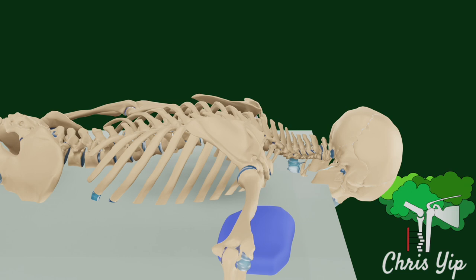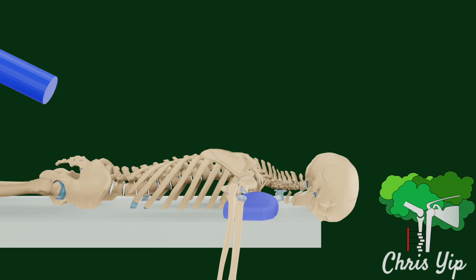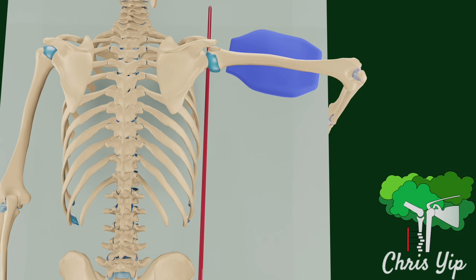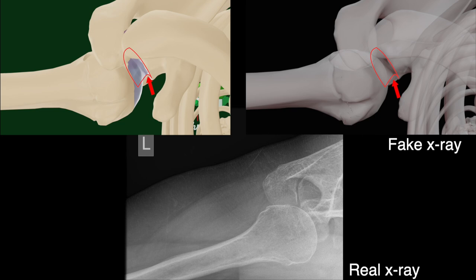Using a blue cylinder to represent the x-ray cathode and a red line to illustrate the direction of the x-ray beams, we can see that the cathode has to be first tilted 25 degrees relative to the longitudinal axis and then 25 degrees lateral from the midline of the spine. The resulting image will show the indentation from the bony Bankart lesion, identified by a sharp change in angle in the anterior glenoid.